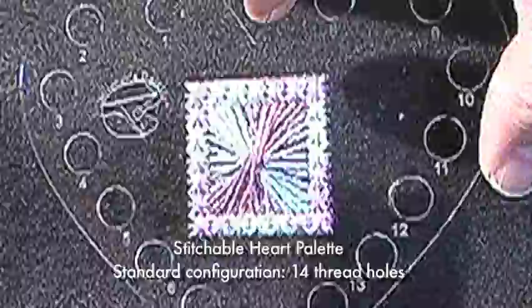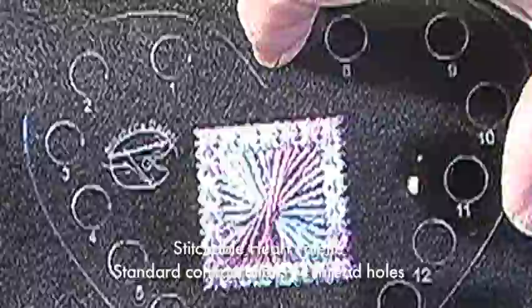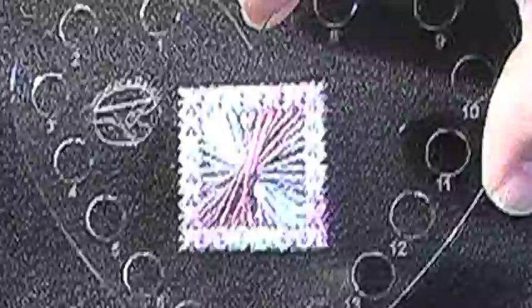Here again we have the 15 by 15 grid, which is 14 cross stitches, again with a needle park stitched into the palette.